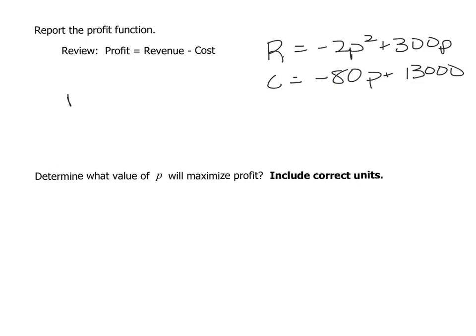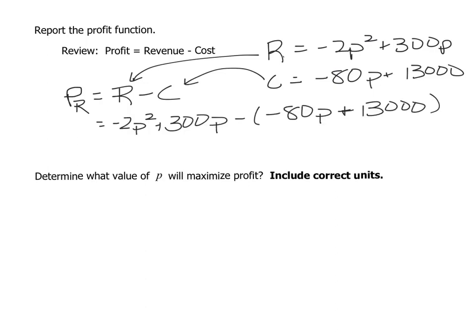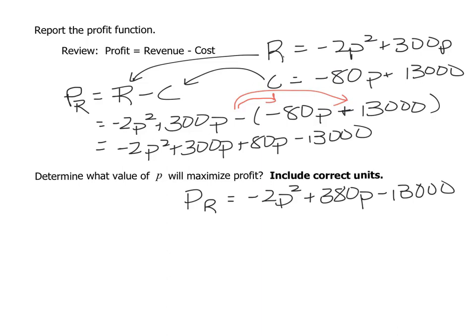If I use those two functions, profit is revenue minus cost, and then I plug that into my revenue, plug that into my cost. Now it's really easy to mess up the next step. You have to remember to distribute that negative sign across both terms. We end up with profit is negative 2P squared plus 380P minus 13,000.